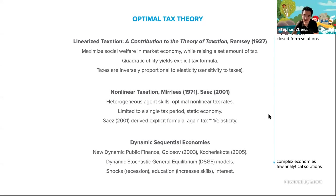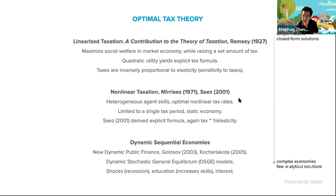What Ramsey showed is that if you make some approximations — for instance, assuming that the utility of every agent is locally quadratic — you can actually derive explicit tax formulas. Here, utility we can think of as the reward that an agent experiences. The key point Ramsey showed is that taxes should be inversely proportional to the elasticity. Elasticity means how sensitive people are to a change in the tax rate. Then in 1971 and 2001, there has been more theoretical work where people try to get away from these linearization assumptions with nonlinear taxation.